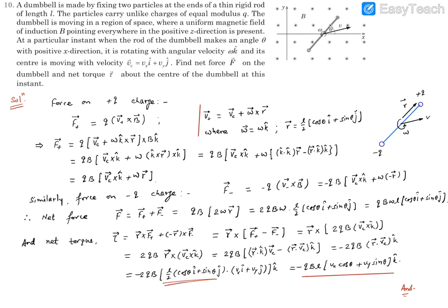Now we can put the value of R and Vc as given to us. Vc is the equation we have just talked about. So the dot product of these two vectors is very simple, and these two are getting cancelled. So you'll find it's going to be minus Q B L, and then it will be Vx cos theta plus Vy sin theta, and k cap. So this is the unit vector for the direction. We can say this is the magnitude of torque and minus k cap is its direction.